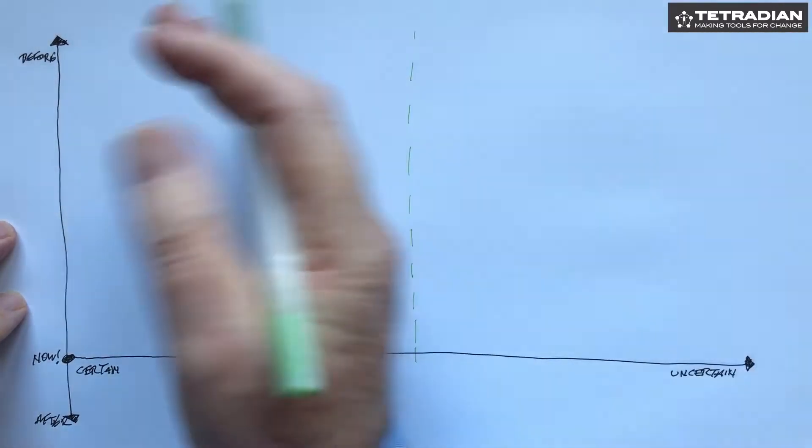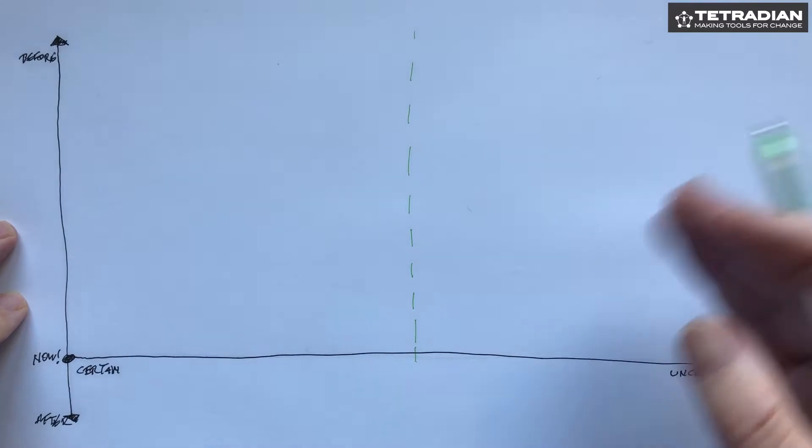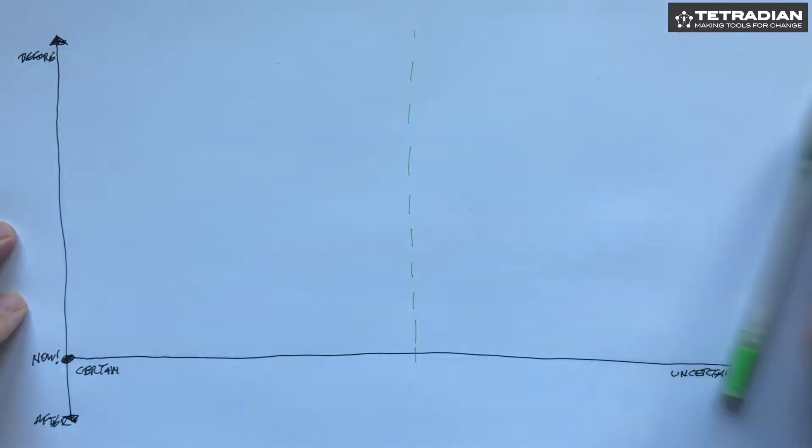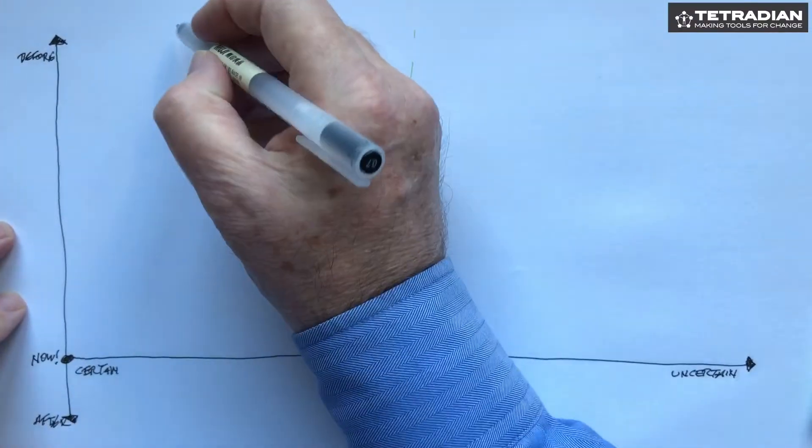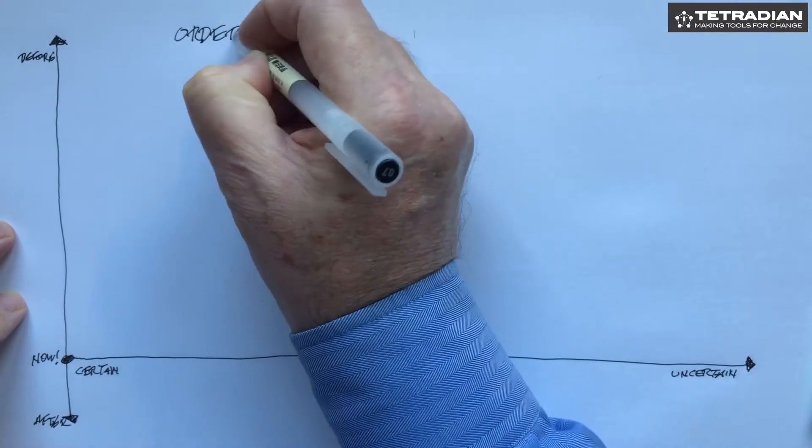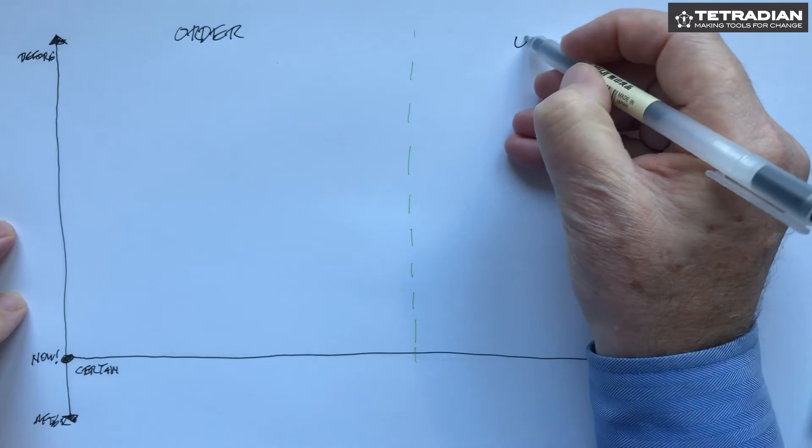So on one side we have sameness, on the other side we have difference, where we either have to do different things to get the same kind of result, or if we do the same things we will get or may get a different result. So on one side we've got certainty or order, and on the other we've got unorder.